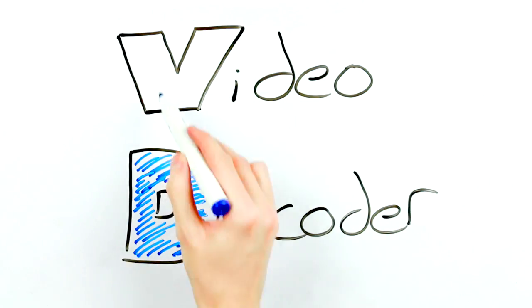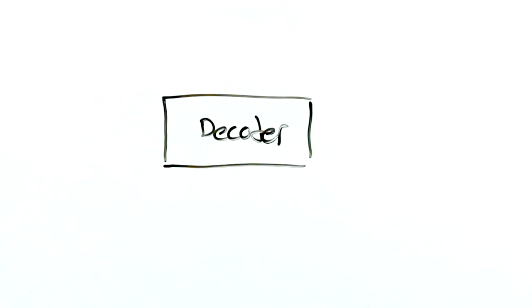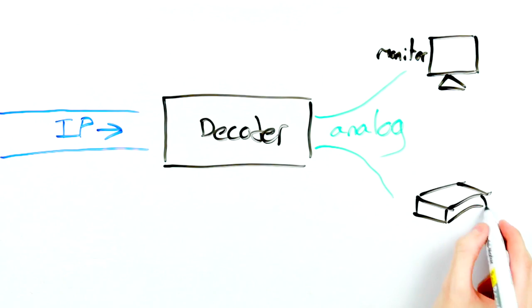Video decoder. A decoder is a very rarely used device as it does the reverse of an encoder and decodes IP network into analogue video signal. This is only really necessary if you have an older system that is using analogue monitors or DVRs.